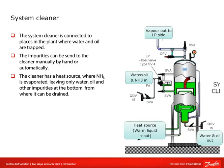The system cleaner is connected to places in the plant where water and oil are trapped. Impurities can be set for cleaning manually or automatically. The cleaner has a heat source where ammonia is evaporated, leaving only water, oil, and other impurities at the bottom from where they can be drained.